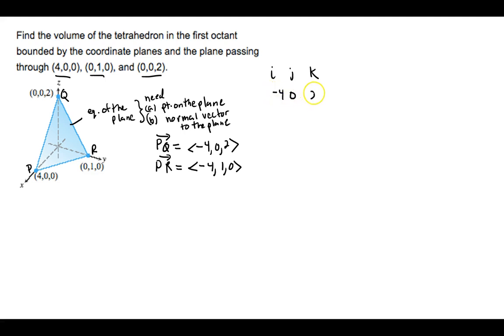We cross these two to get the normal. So negative 4, 0, 2 crossed with negative 4, 1, 0. Take the cross product here: negative 2 in the i component, negative 8 in the j component, and negative 4 in the k component.